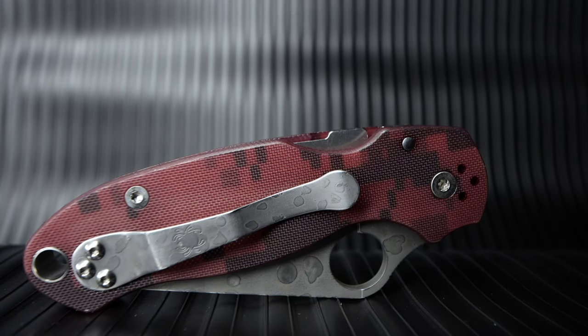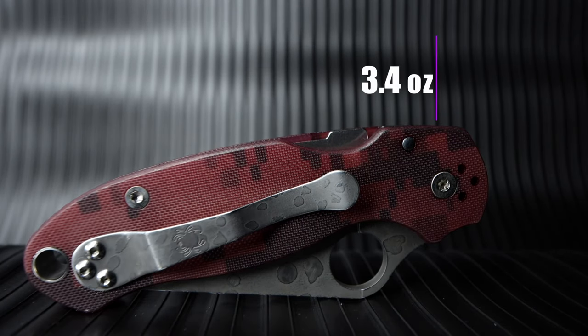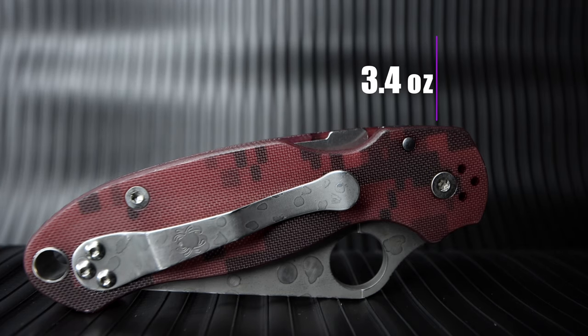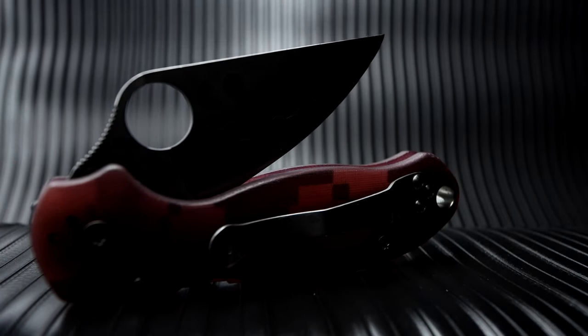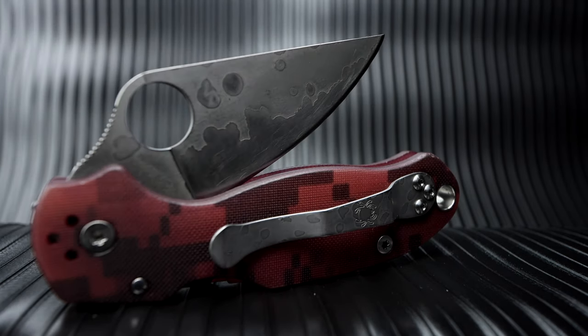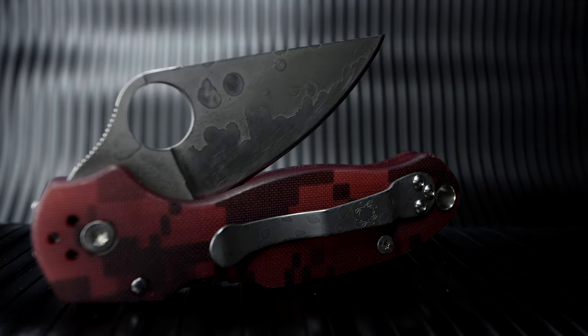The PM3 weighs in at 3.4 ounces with a stainless steel frame liner lock and with a full flat grind on a satin finish blade. But of course, I've etched Vincent Van Gogh's Starry Night onto mine. The blade is S30V.